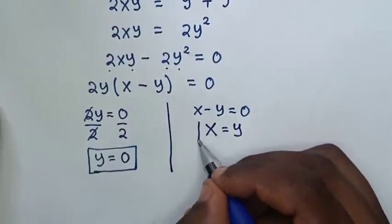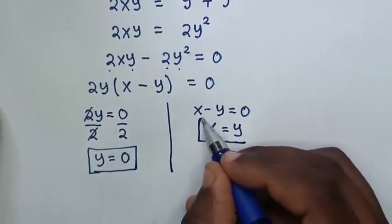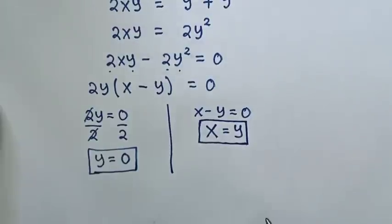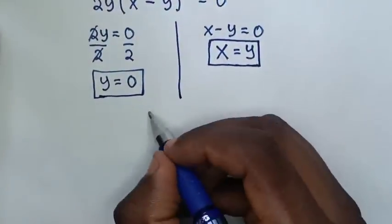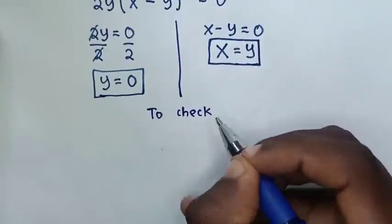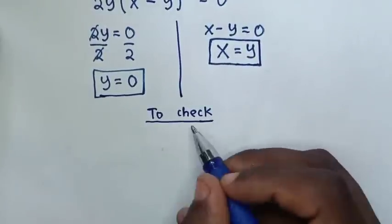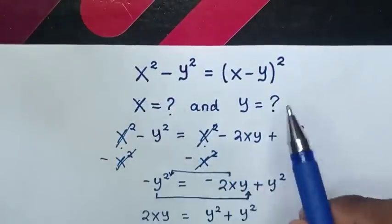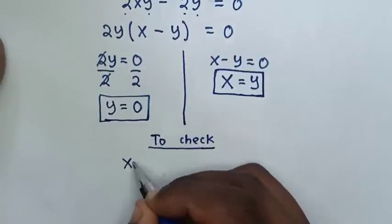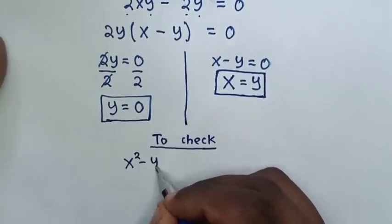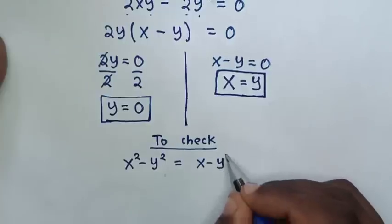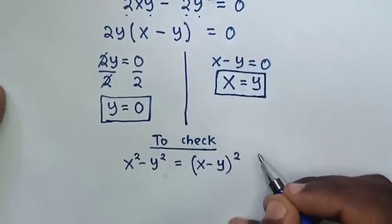Therefore, the solution for the value of x is equal to y. Now, to check if our answer is correct — from our original problem, which is x squared minus y squared is equal to x minus y bracket squared.